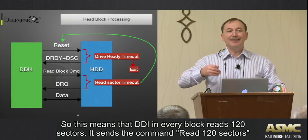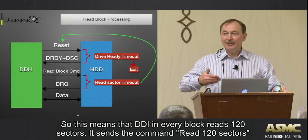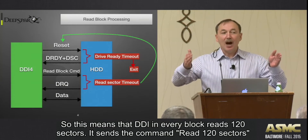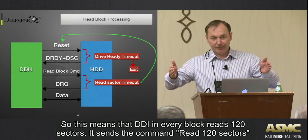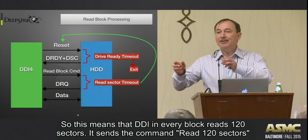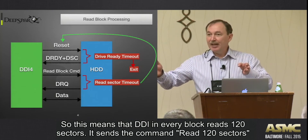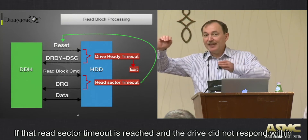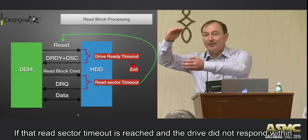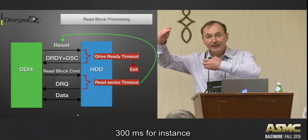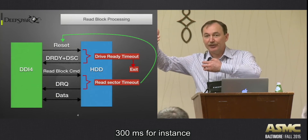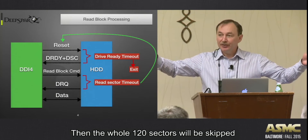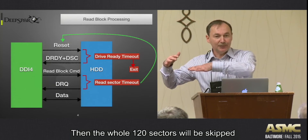So, DJI reads every block — every time it reads by 120 sectors. It sends the command: read 120 sectors, and then wait for each sector timeout. If that read sector timeout is reached and the drive didn't respond within 300 milliseconds, for instance, then the whole 120 sectors will be skipped at this point.